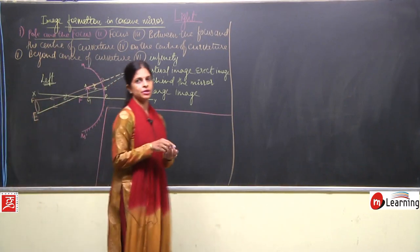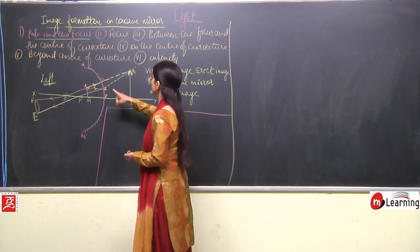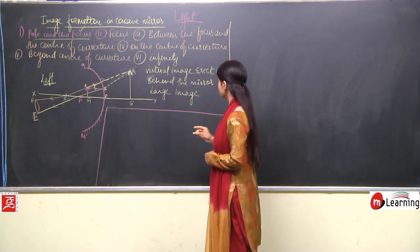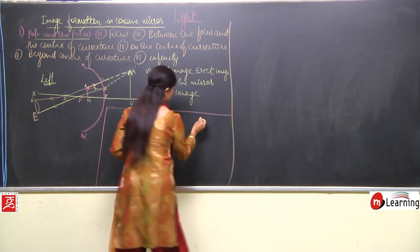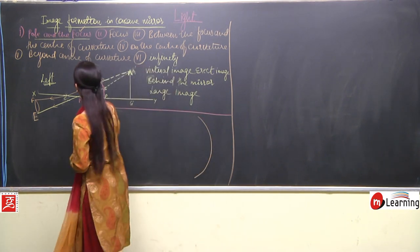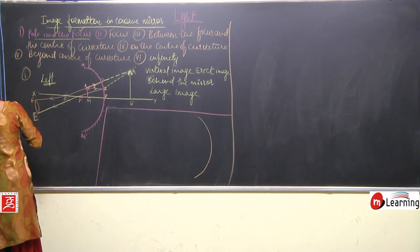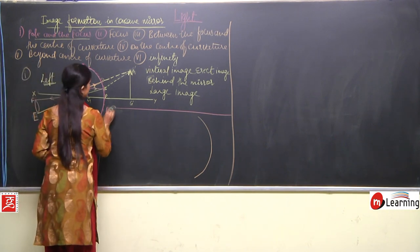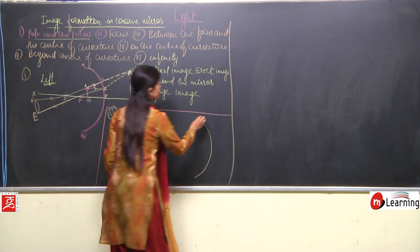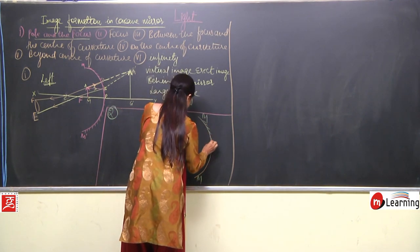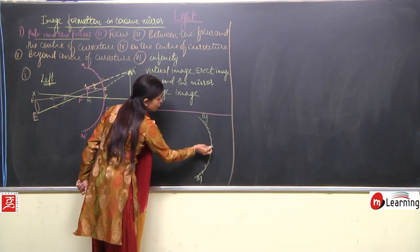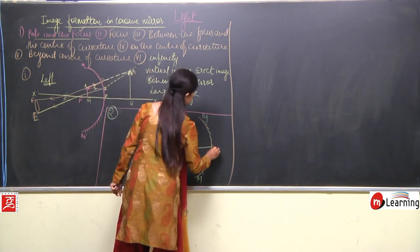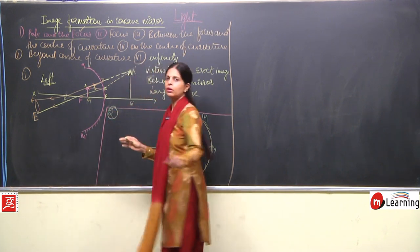Now we will talk about the second position. The first one — pole and focus — we have dealt with, that is over. Now I will draw the second one. This is the first diagram and now this will be the second one. Again, M M-dash, principal axis, pole, center of curvature, and all.